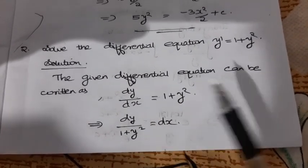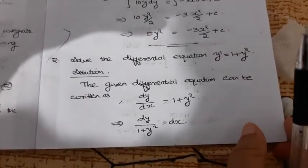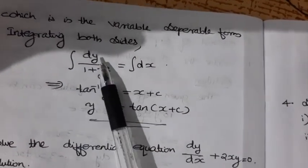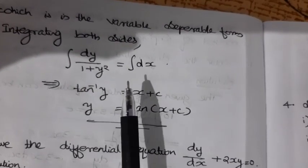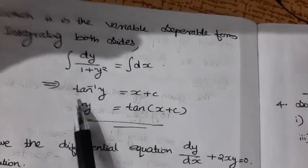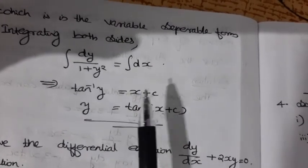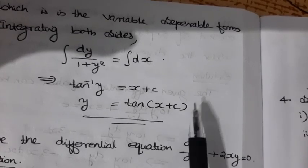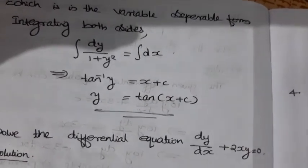We integrate both sides: integral of dy / (1 + y²) = integral of dx. We have integral of 1/(1 + y²) dy = tan⁻¹(y), and integral of dx = x + c. Therefore, tan⁻¹(y) = x + c, which gives y = tan(x + c). This is the general solution.